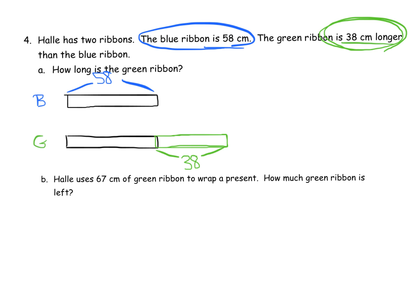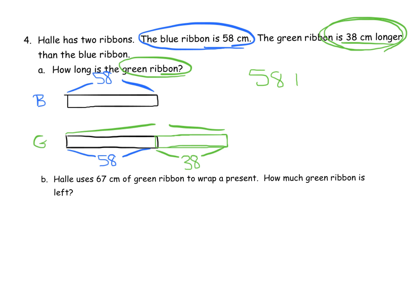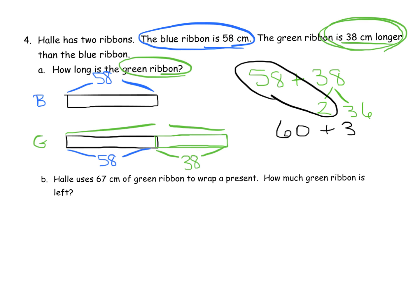The question is how long is the green ribbon — that's the whole green bar. We know the shared portion is 58 because we started with two equal-length tape diagrams. So we do 58 plus 38. Using a number bond, I split 38 into 2 plus 36: 58 plus 2 is 60, plus 36 equals 96. So the green ribbon is 96 centimeters long.